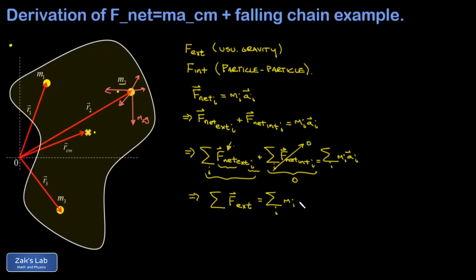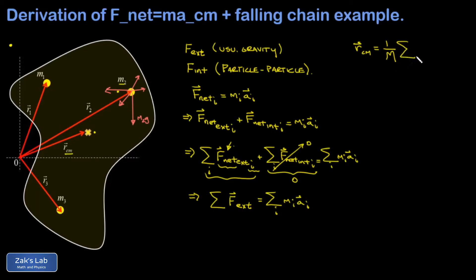On the right-hand side we still have the sum of all individual masses multiplied by their acceleration vectors. This rings a bell - it's somehow related to the center of mass. As a quick reminder, the center of mass position vector points from the origin to the center of mass of the body, and it's given by one over the total mass times the sum of each mass multiplied by its position vector.